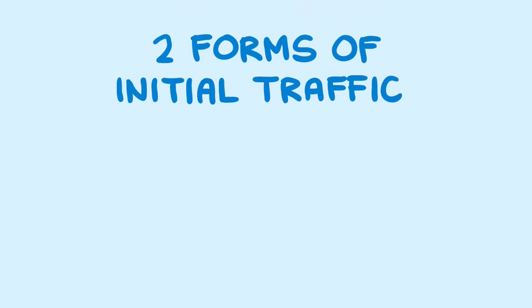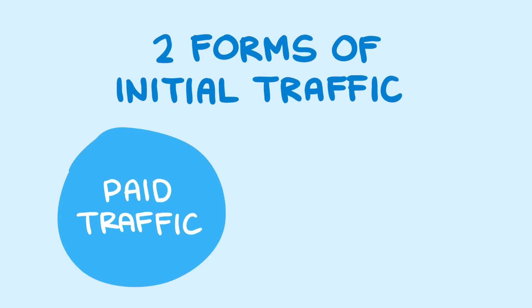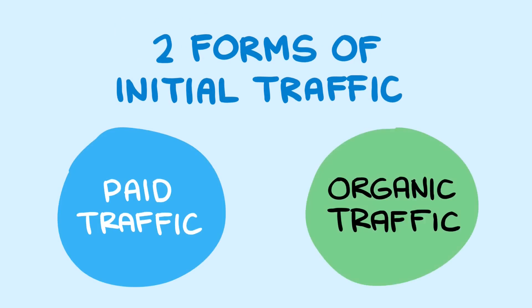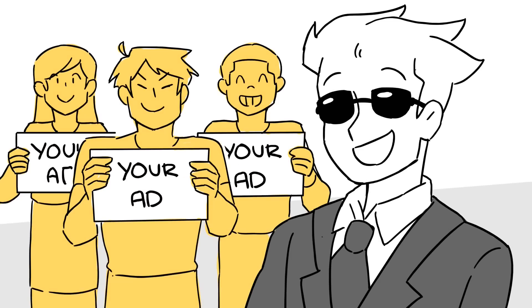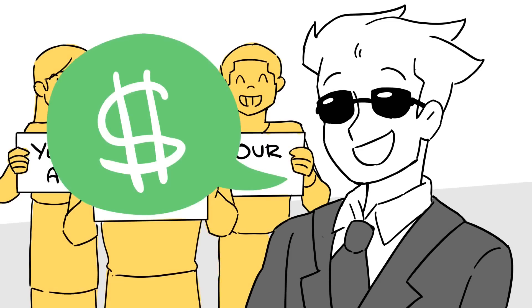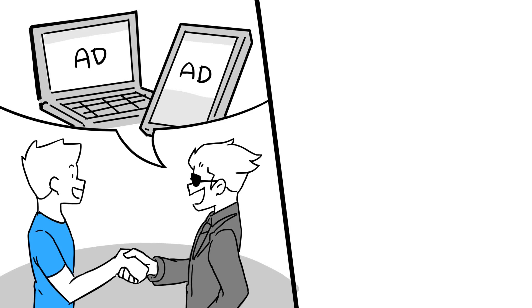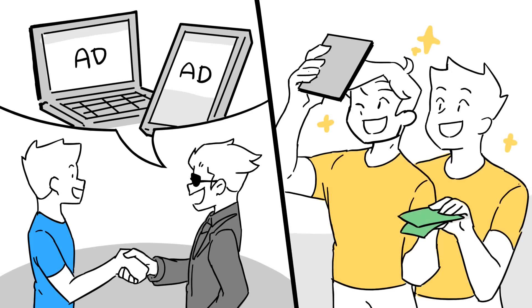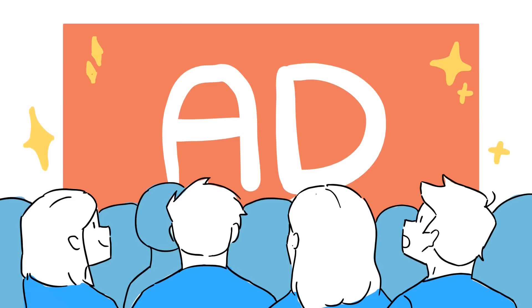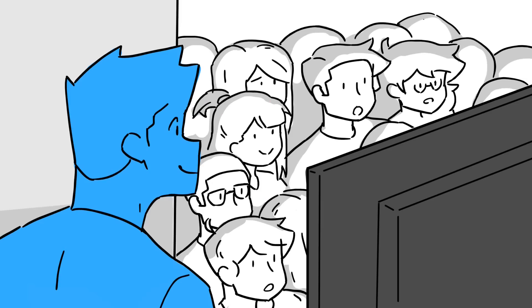Now there are two forms of initial traffic: paid and organic. Paid traffic is, like the name suggests, traffic or views that you have to pay for — whether it's buying ads on Google or Facebook, or paying an influencer to mention you in their Instagram post or YouTube video. Paid traffic can be effective if you know what you're doing, but it can be very costly and there is always some level of risk involved.